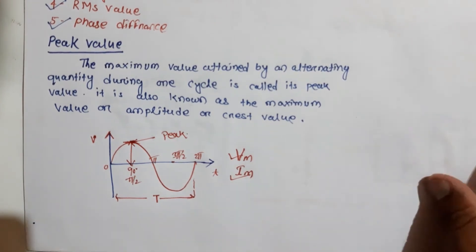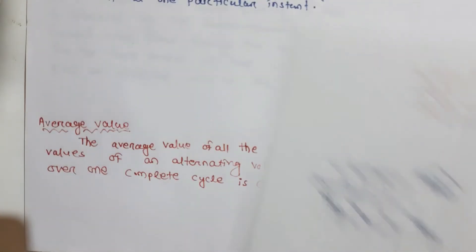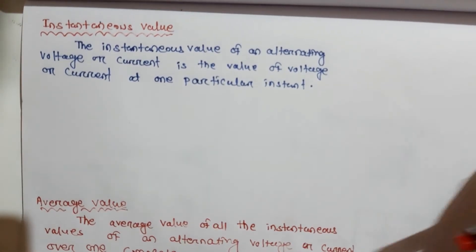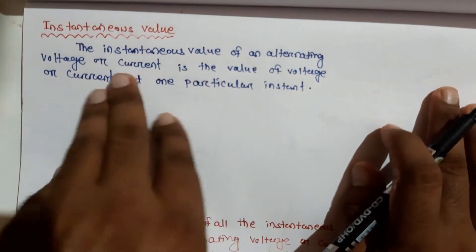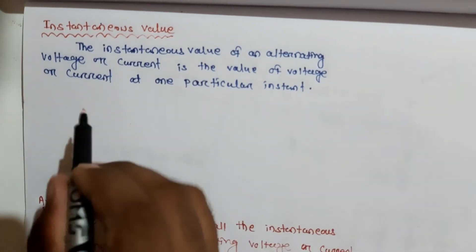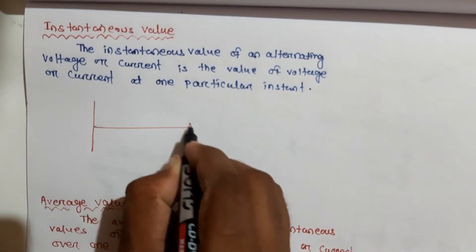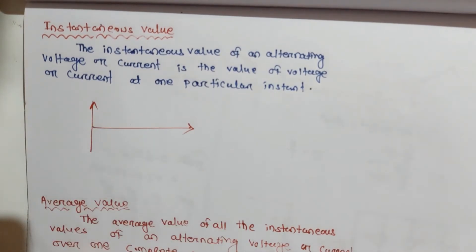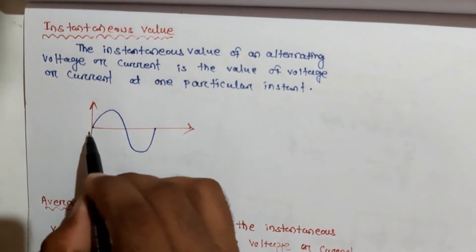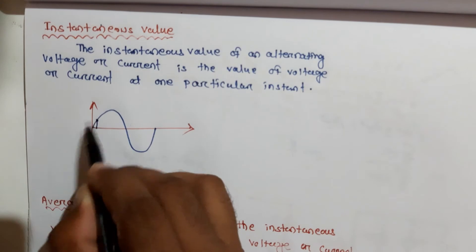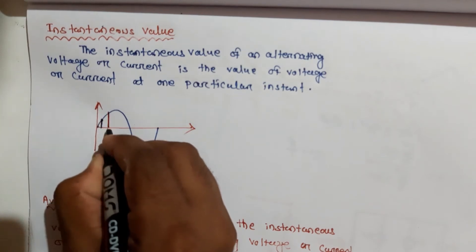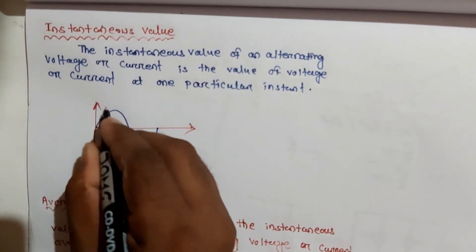Next we discuss instantaneous value. The instantaneous value of an alternating voltage or current is the value of voltage or current at one particular instant. Taking an example of alternating current, at any particular instant — say this instant or that instant — the value at that moment is called the instantaneous value.